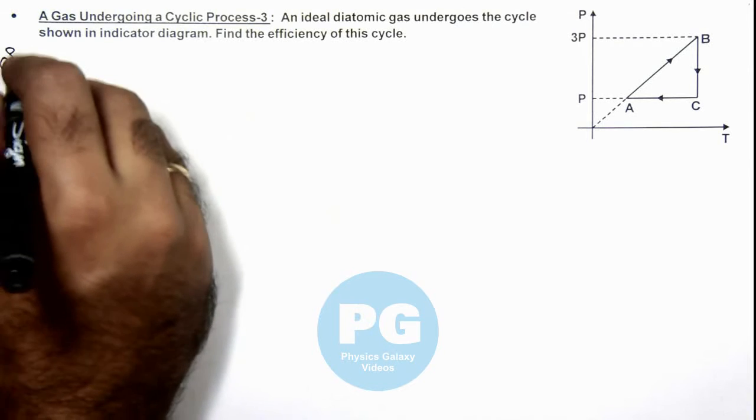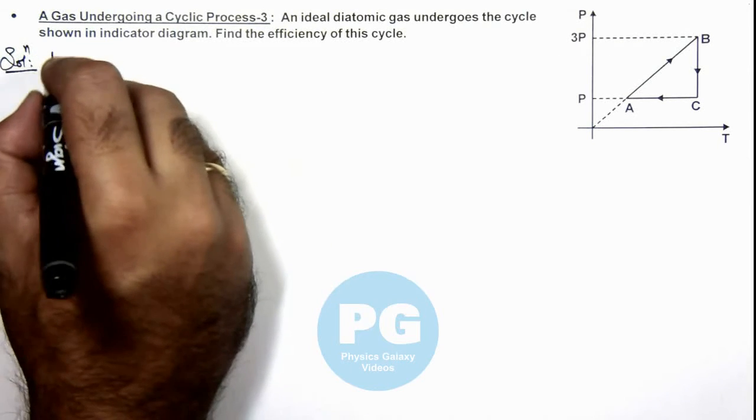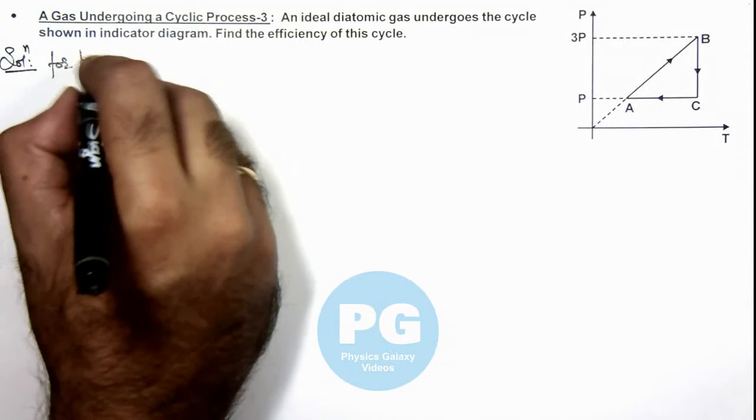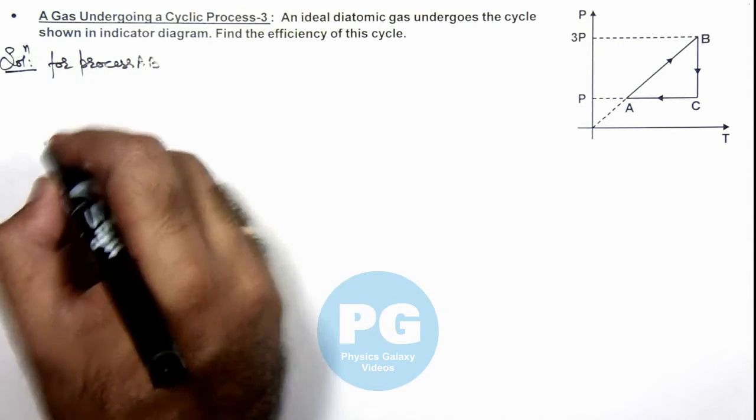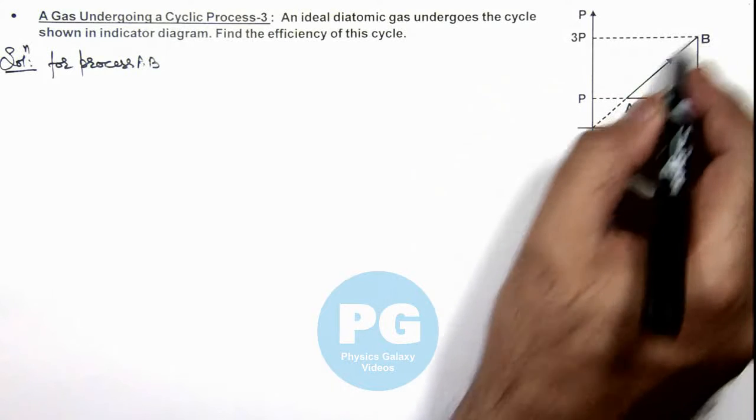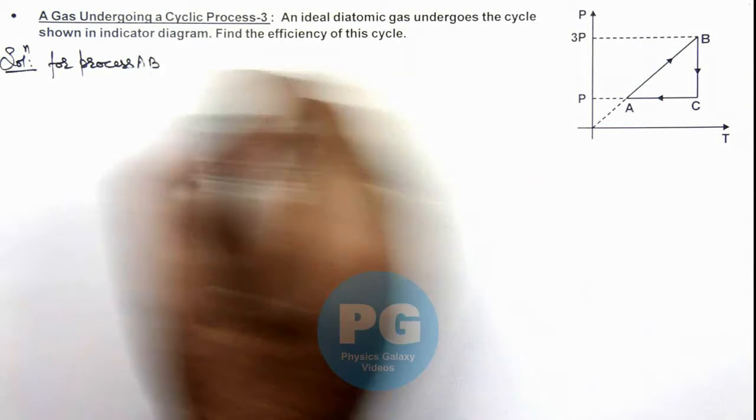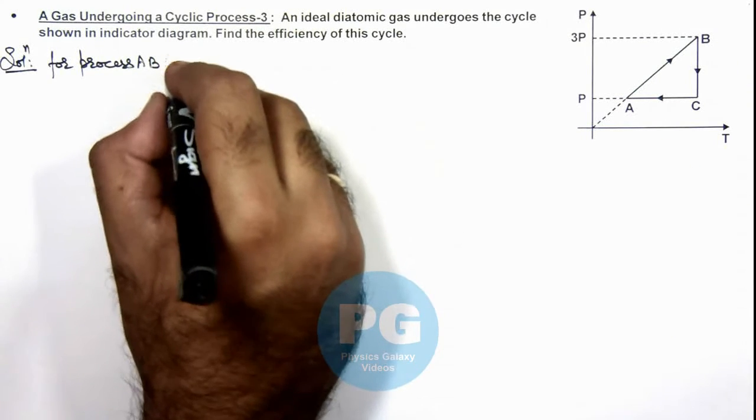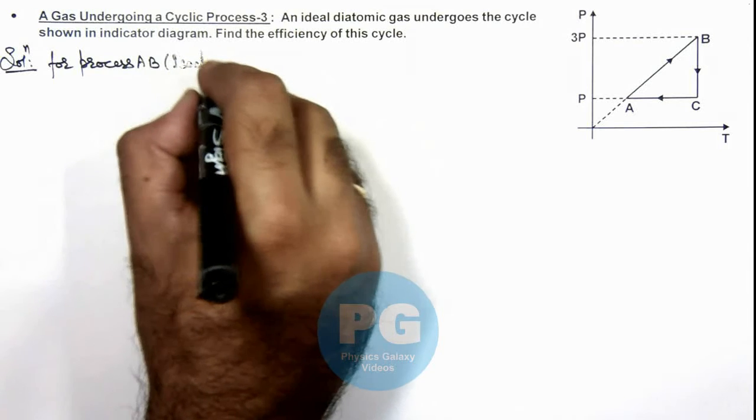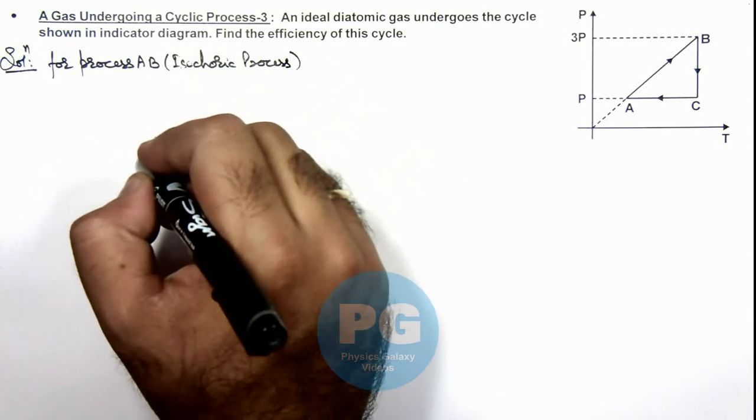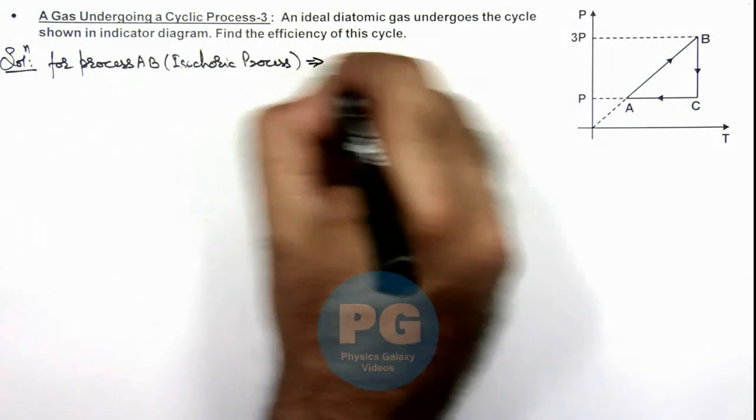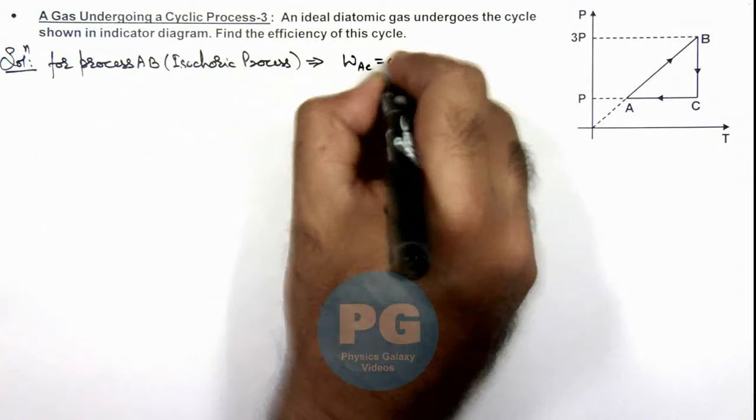Now we can calculate in solution step by step for all processes. First we can talk about process AB. In process AB, this is a straight line passing through origin, so this AB will be an isochoric process. As this is an isochoric process, we can directly write down this implies work done in process AC is equal to zero.